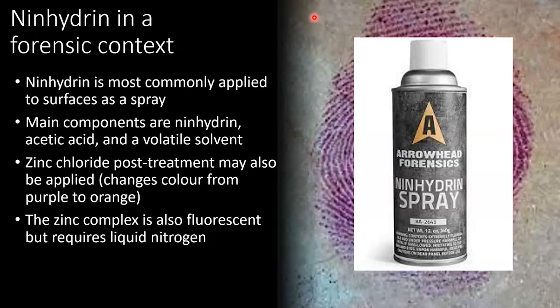There is an optional final step where you apply a zinc chloride post-treatment. This forms a metal complex with Ruhemann's purple, changing its color from purple to orange. That can be useful if you don't get a lot of contrast with the purple color against the background surface. The orange complex is also fluorescent, but it requires cooling to liquid nitrogen temperatures, so it's not often used for that reason.